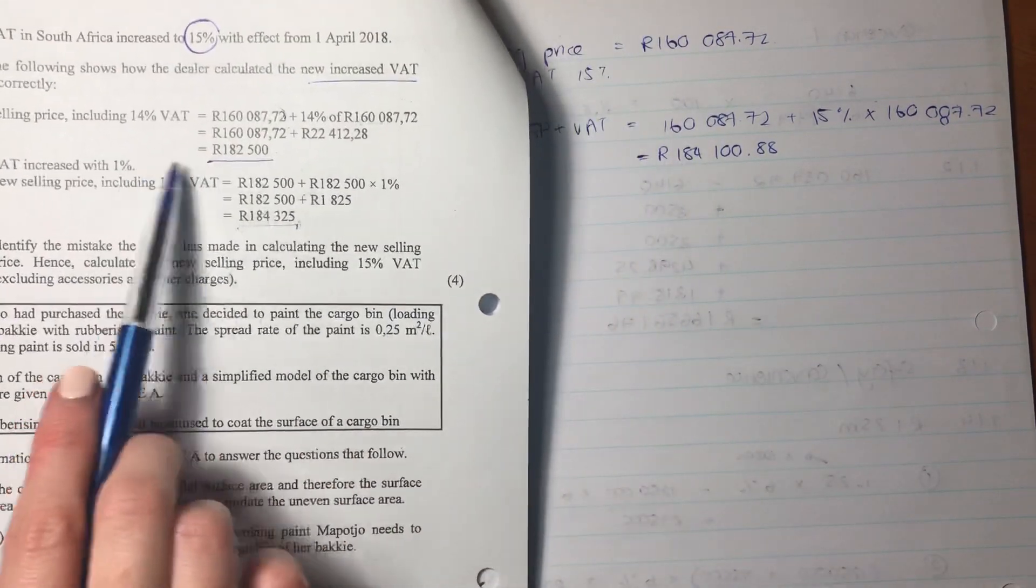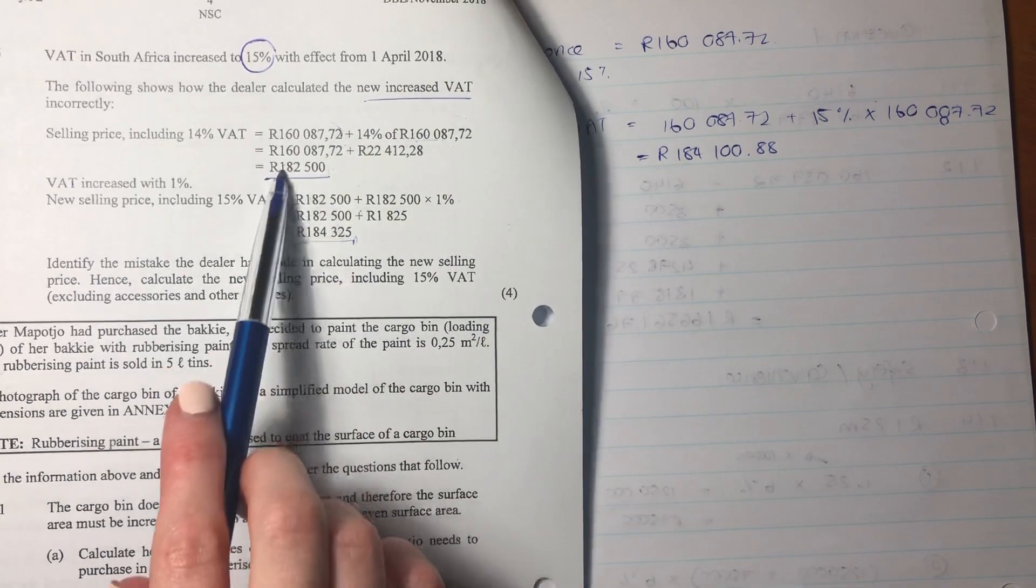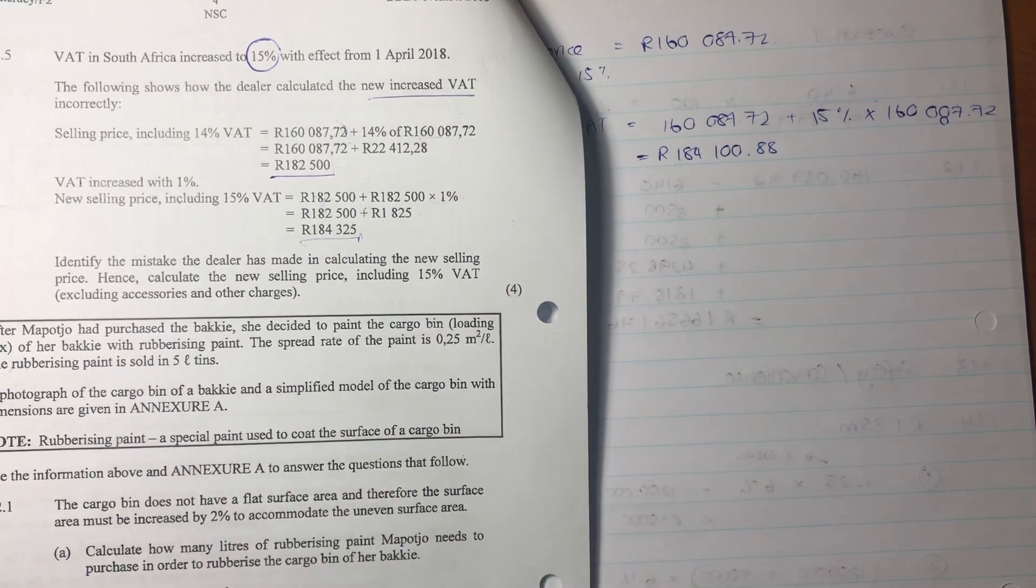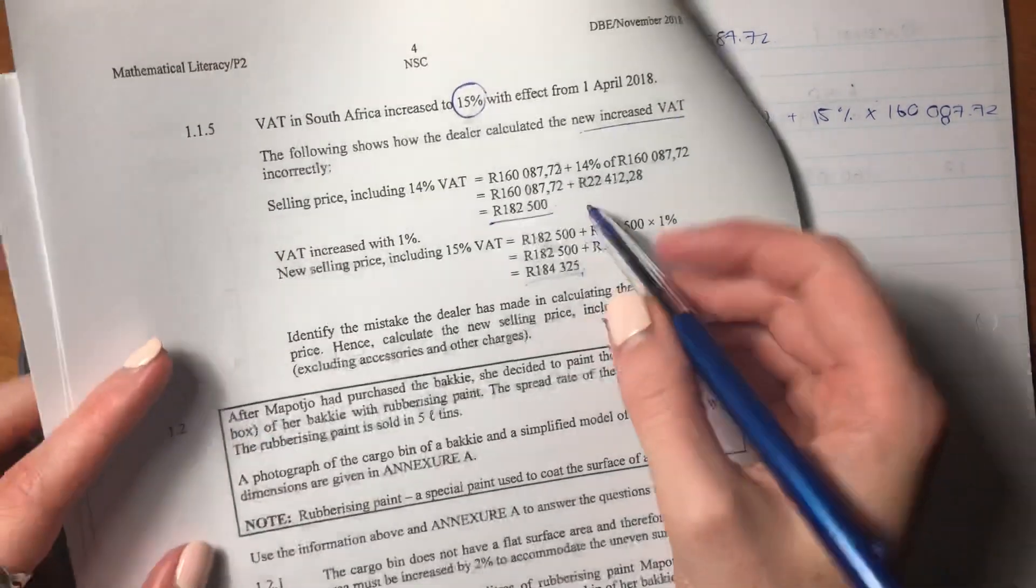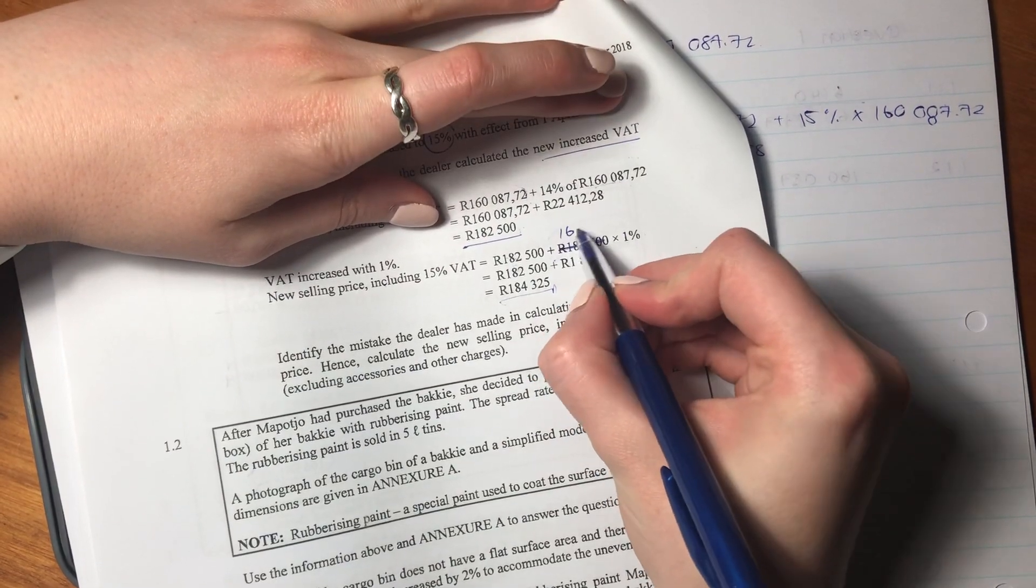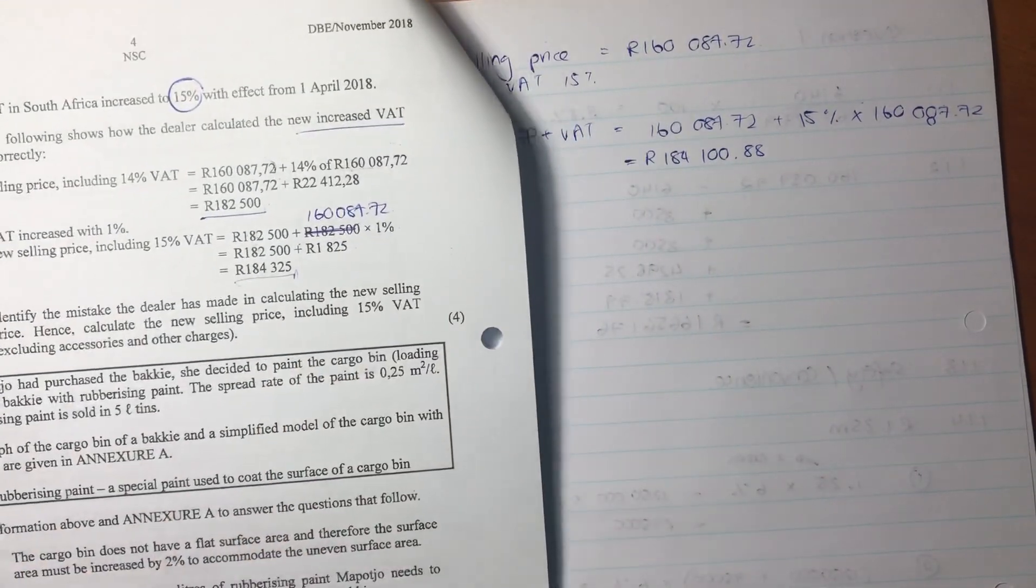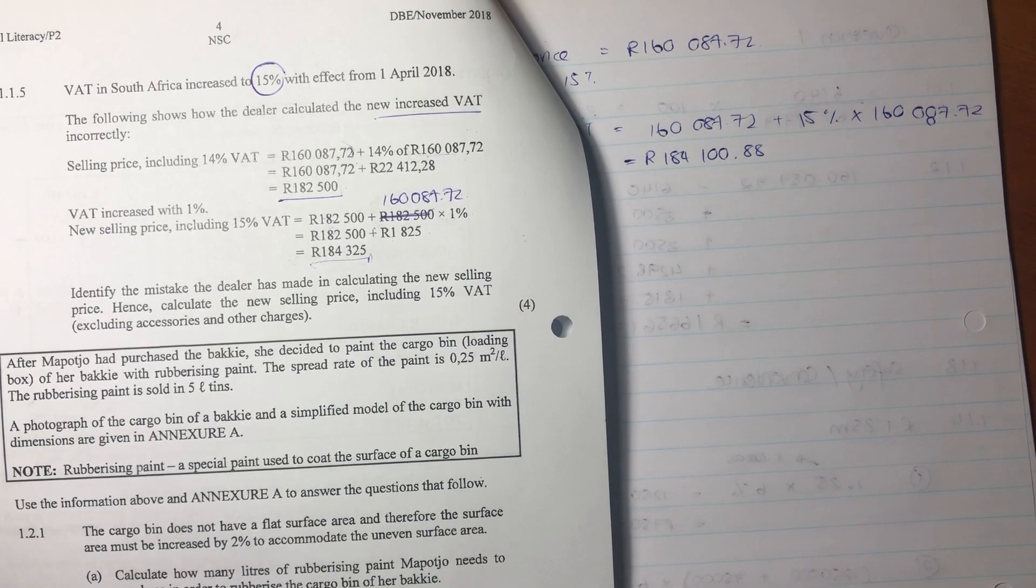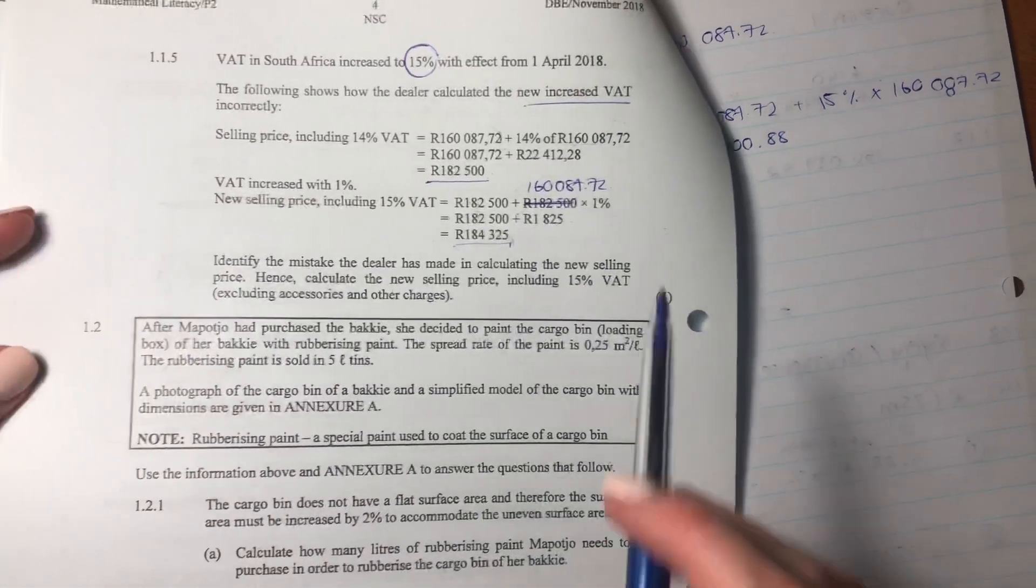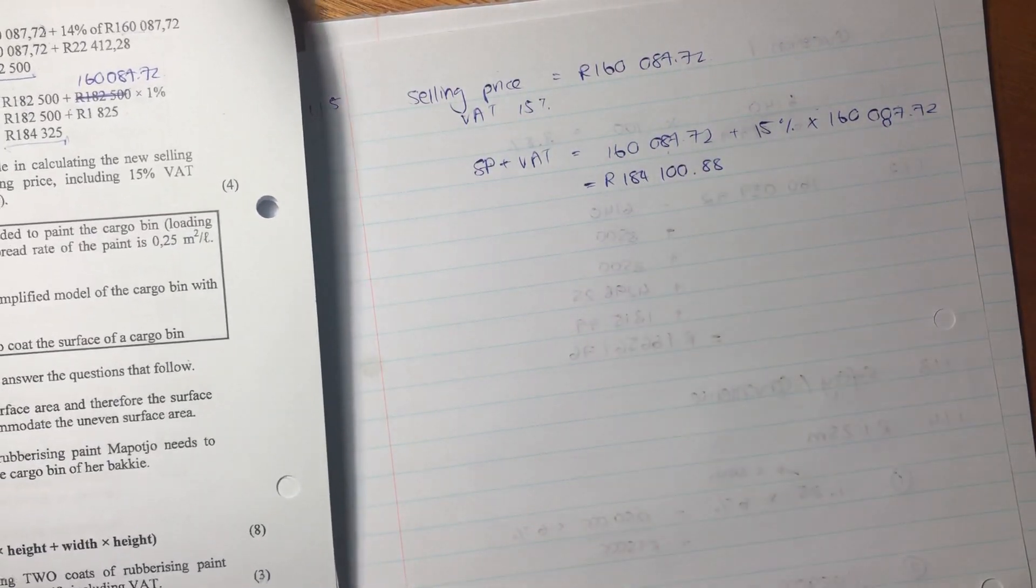Well, you see what we did is we just changed this calculation that he did over here, and we changed this 14% to 15%. What he did is he said I'm just going to use whatever I calculated at 14% and add an extra 1% of this amount to that 14%, whereas actually he should have said 182,500 plus 1% of the original selling price. You can't make it 1% of the increased VAT price, it has to be of the original price, and that's why he's getting the wrong answer. So that's very important to understand. It is a little bit of a difficult one to get your head around, but it's basically saying what does that 15% VAT apply to? It applies to the selling price. It doesn't apply to this new VAT increase price. It always applies to that 160, and that's why it's best to calculate it like we did over here.